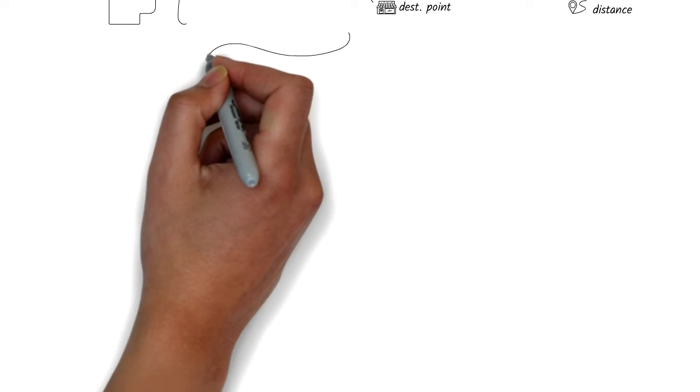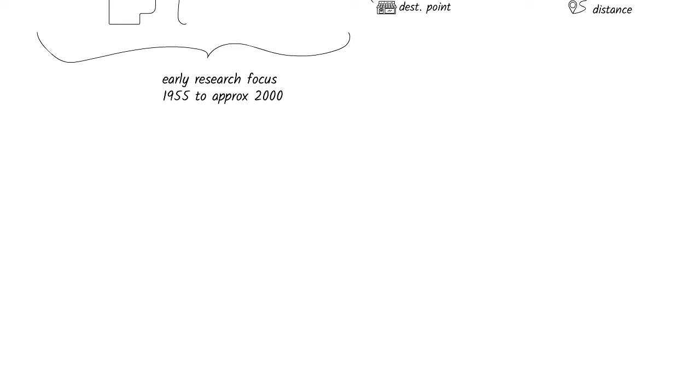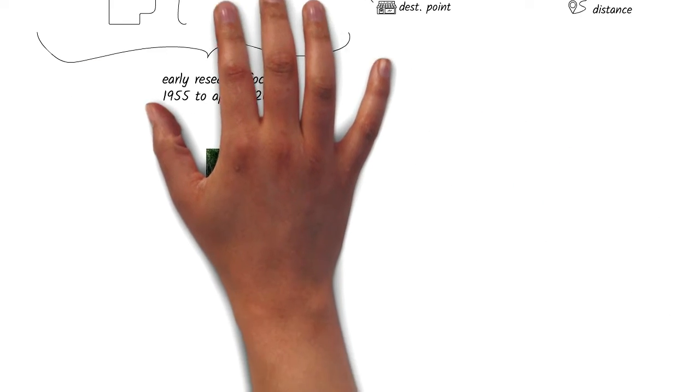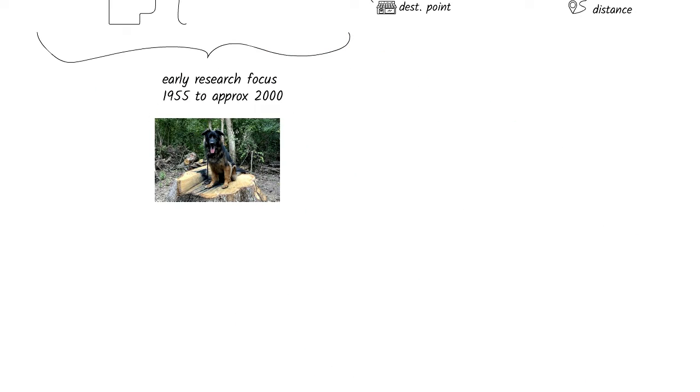Earlier, researchers thought that the symbolic way of knowledge representation was the best way to achieve artificial intelligence. It seems so natural that even dogs seem to model symbols as we can see Zeus do.